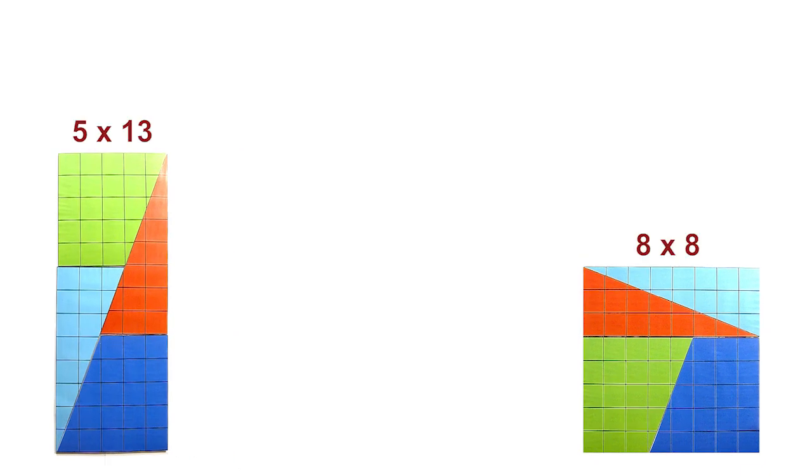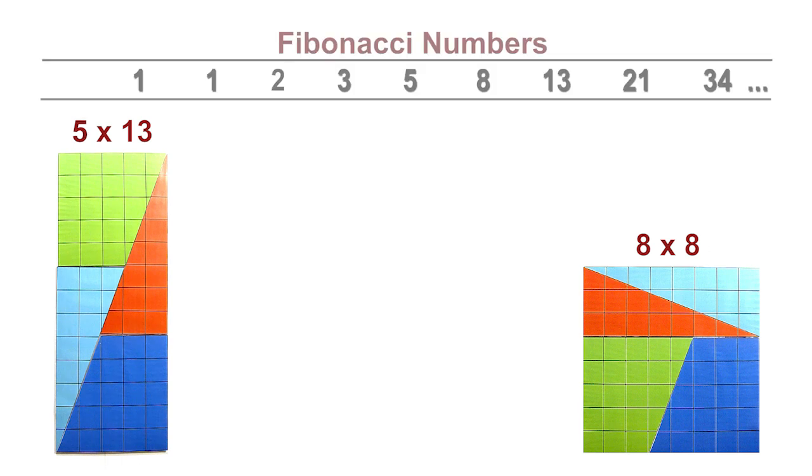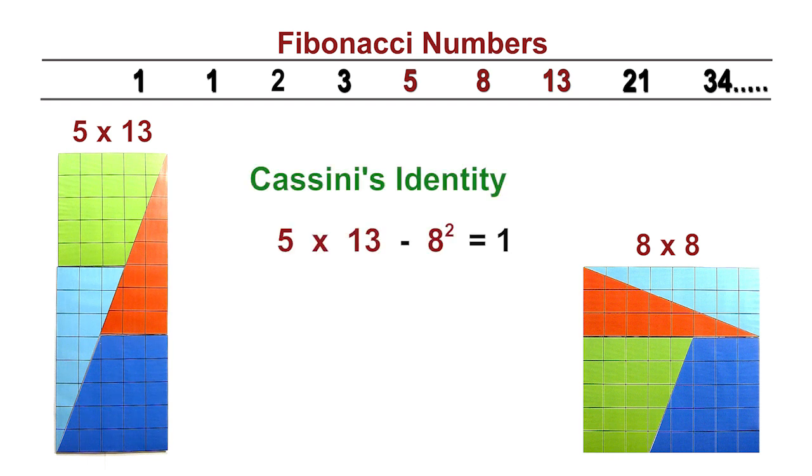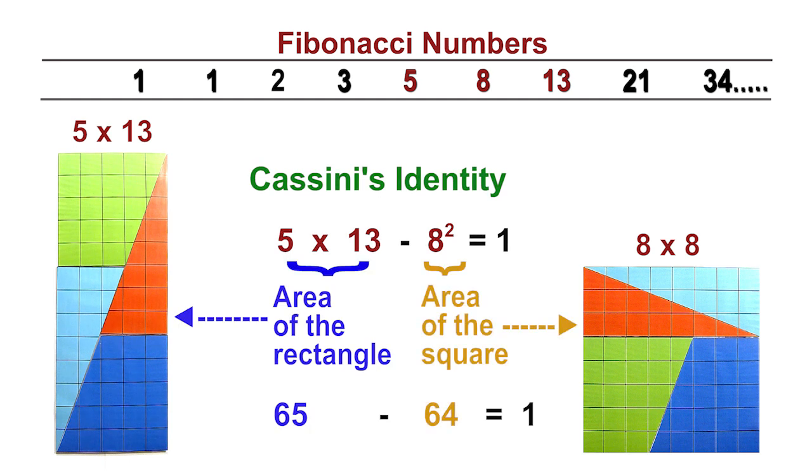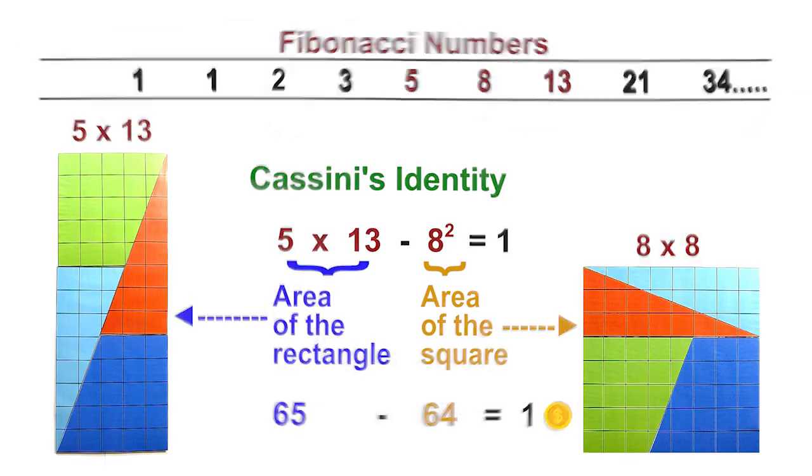What's special about the sides of the square and the rectangle? The square has side 8. The rectangle has sides 5 and 13. 5, 8, and 13 are Fibonacci numbers. There's a relationship between these numbers called Cassini's identity, which together with the golden ratio can explain how this puzzle can bamboozle you.